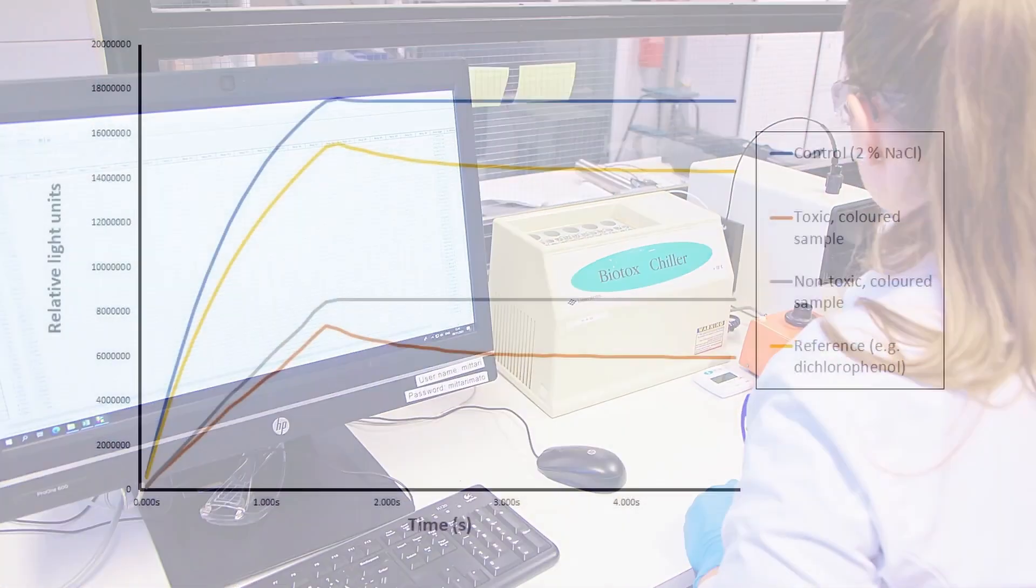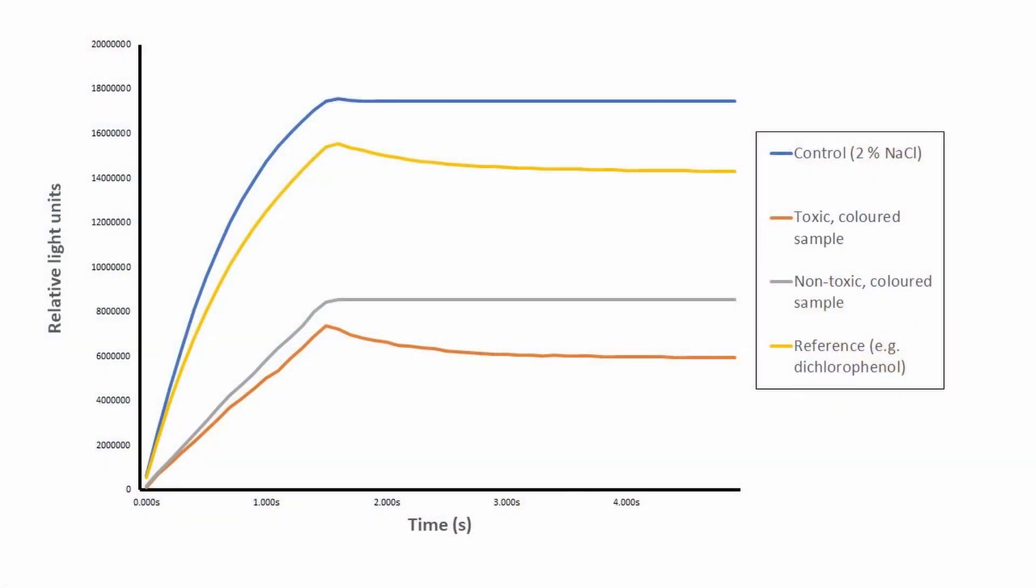The maximum light output is reached a couple seconds after adding the bacteria. The light output remains even in the control sample, whereas in the toxic sample the amount of light immediately starts to decrease. In environmental samples, the amount of light is usually lower than in the control solution due to the natural color of the samples. But the shape of the curve shows whether the light output decreases due to toxicity.